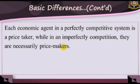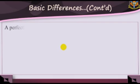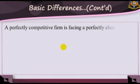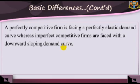4. A perfectly competitive firm faces a perfectly elastic demand curve, whereas imperfectly competitive firms are faced with a downward-sloping demand curve.